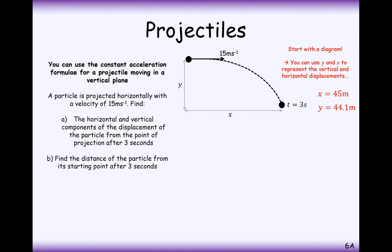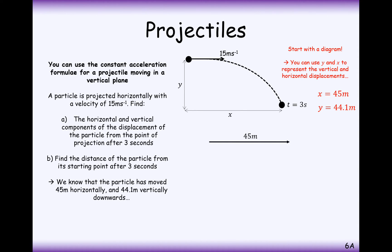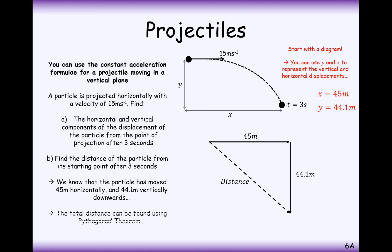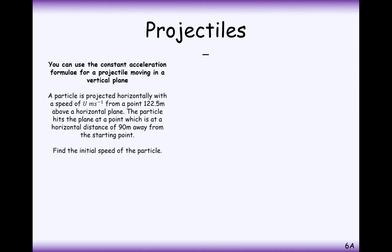So the horizontal component of displacement is 45 metres and the vertical displacement downwards is 44.1 metres. Part B asks for the distance of the particle from its starting point after 3 seconds. Using Pythagoras: distance equals the square root of 45 squared plus 44.1 squared, which equals 63 metres to two significant figures.